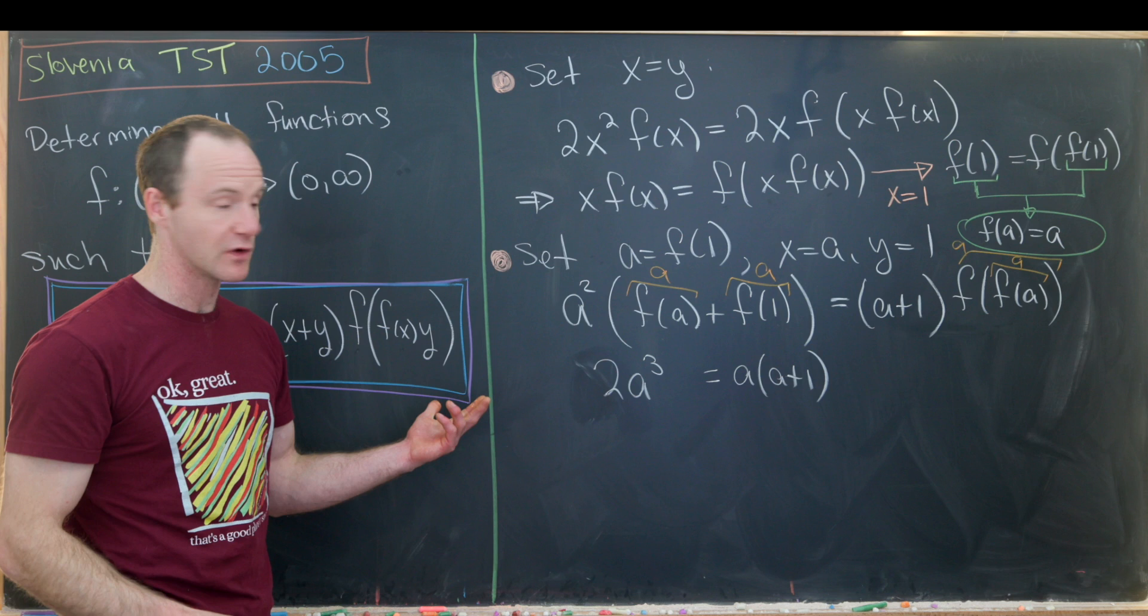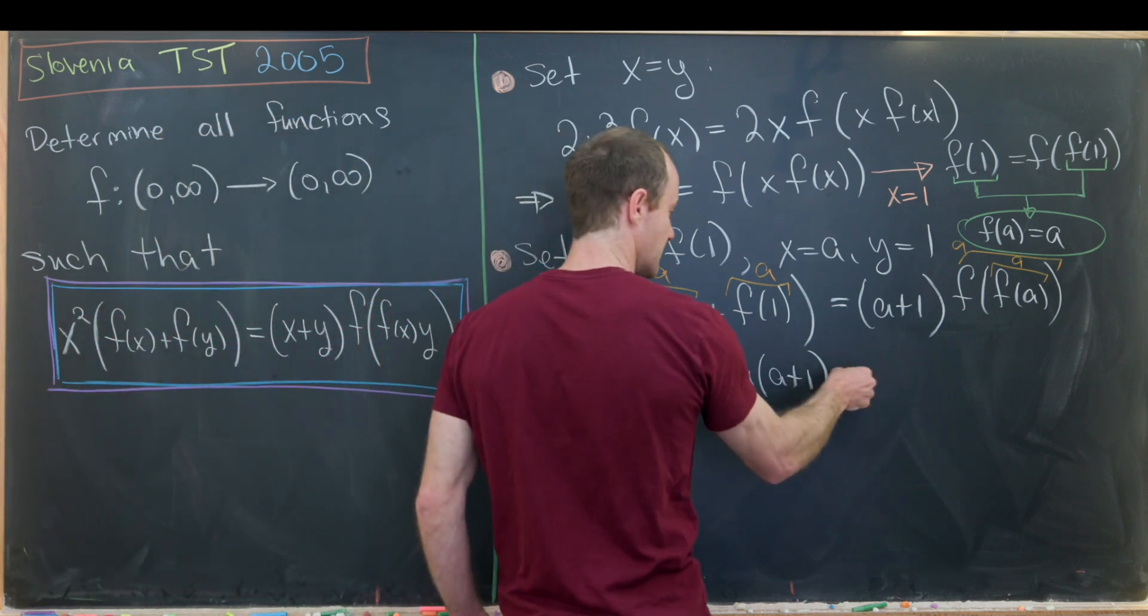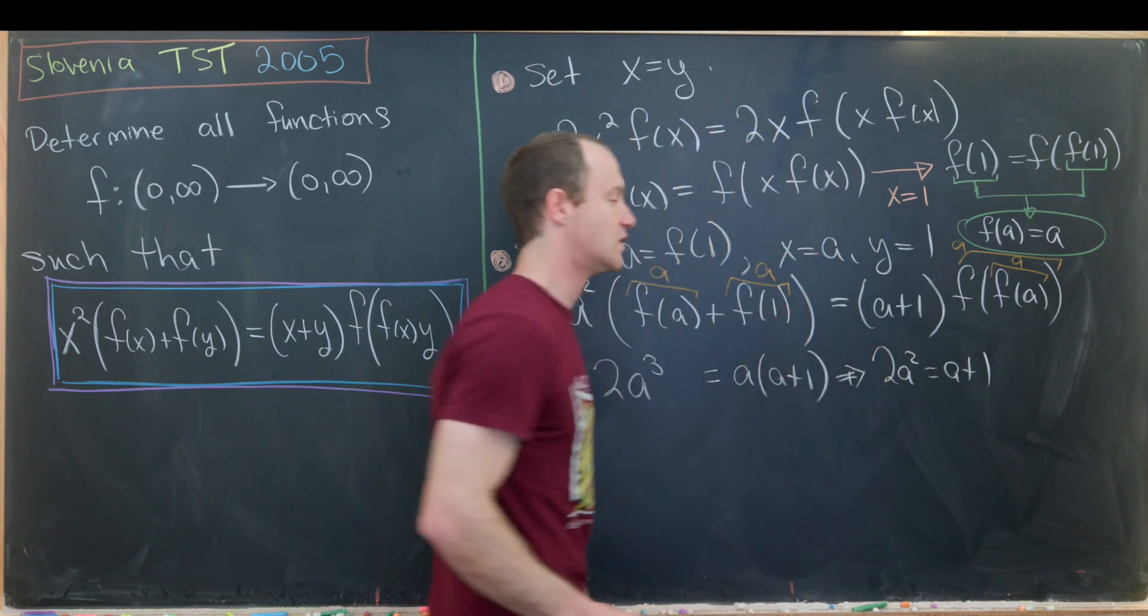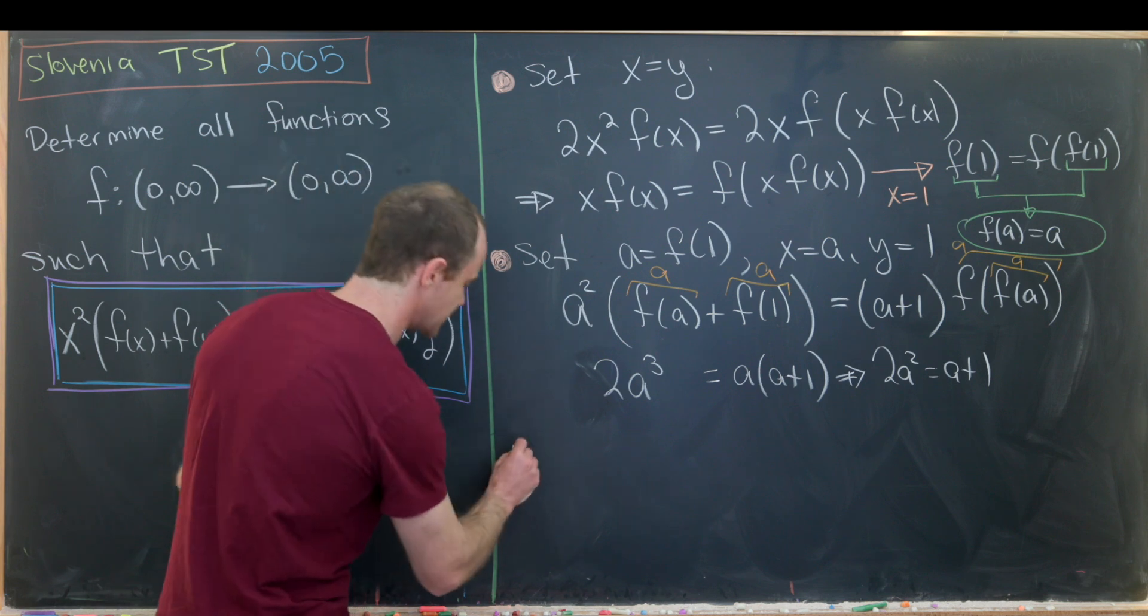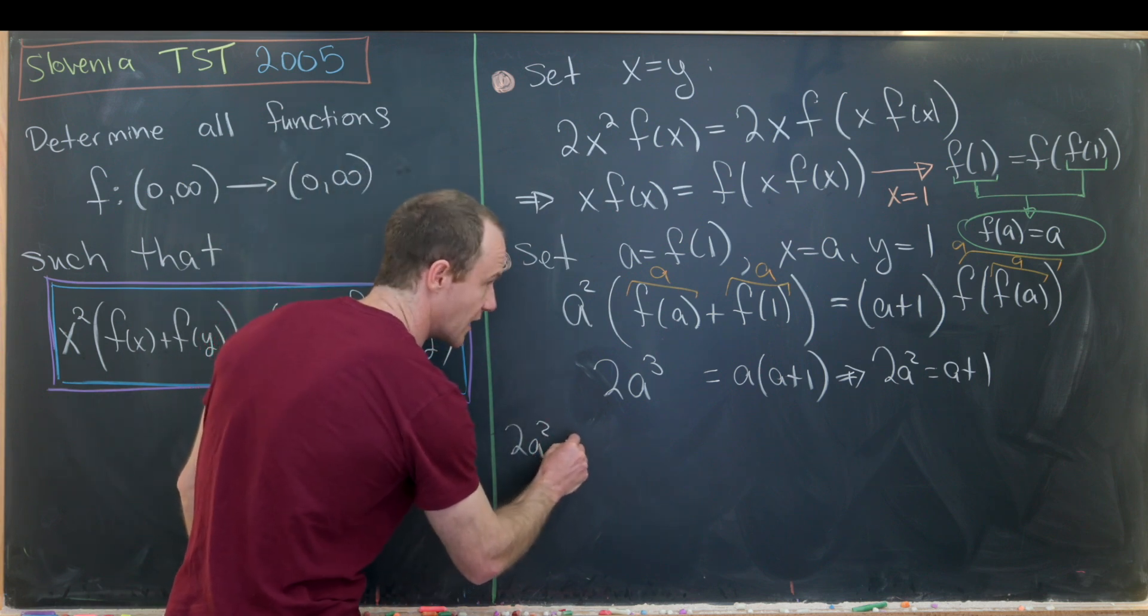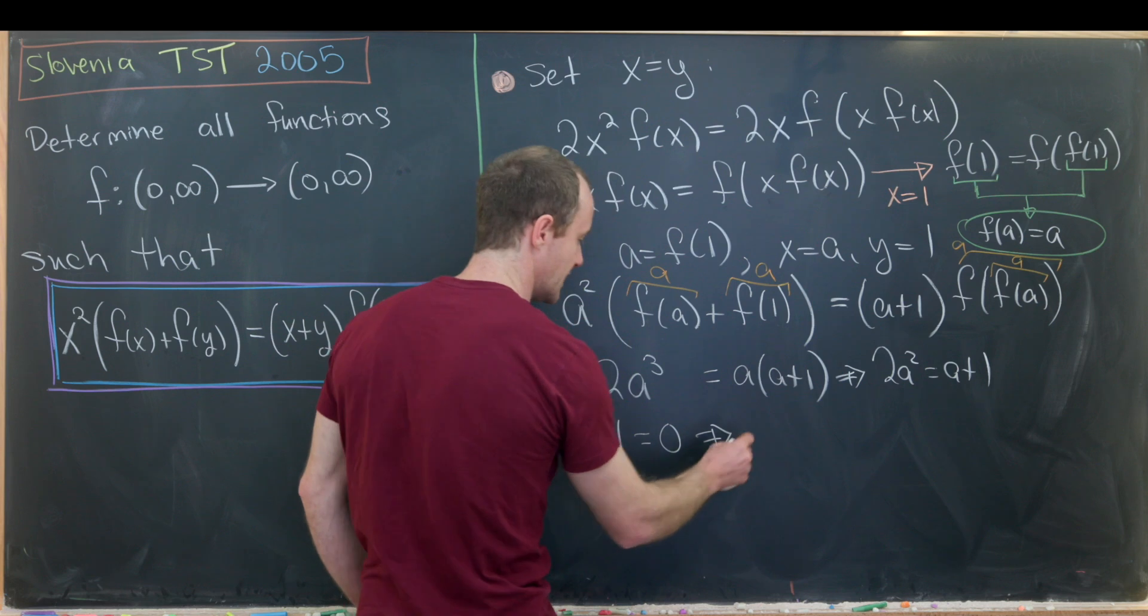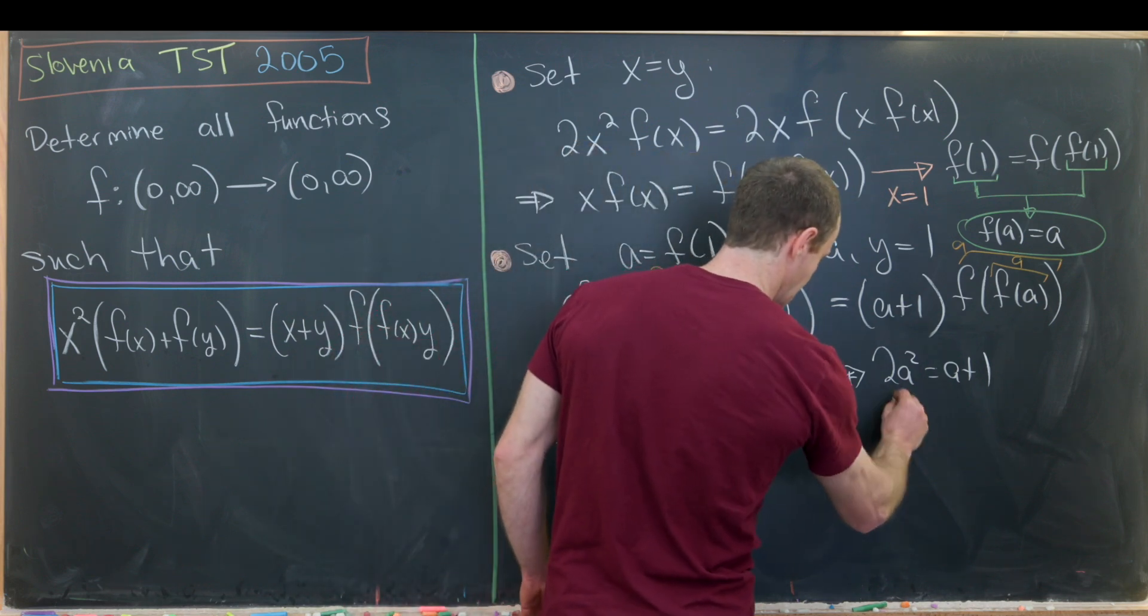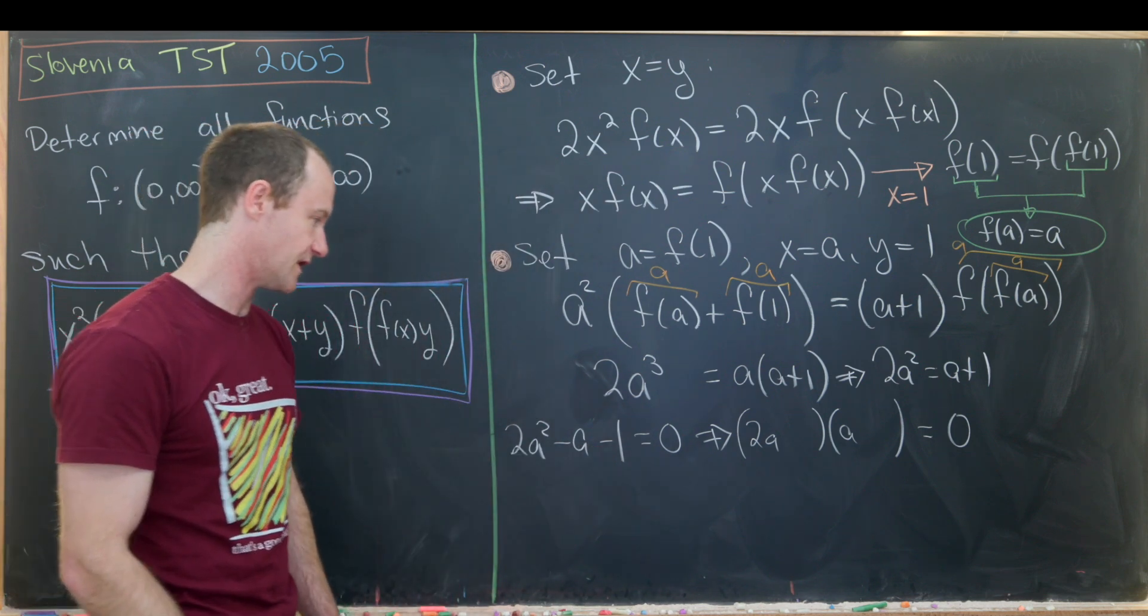Now we can divide both sides by a. We're allowed to do that because a is not equal to zero. And that gives us 2a² = a + 1, which is a quadratic equation for this unknown a. That means 2a² - a - 1 = 0. And then we can factor that as 2a...